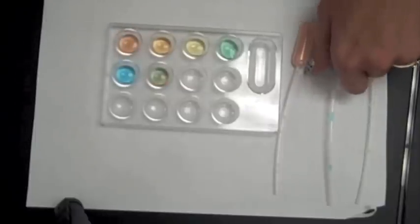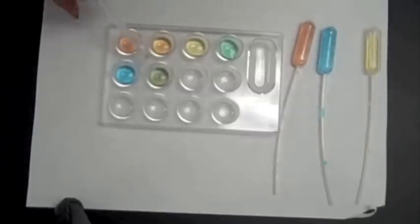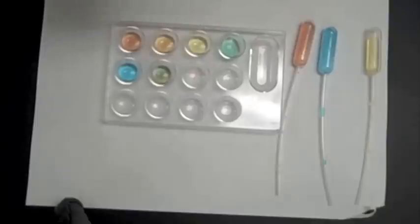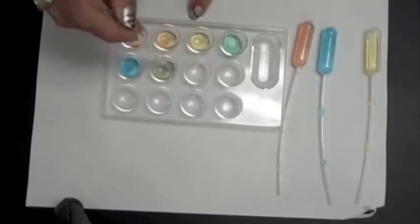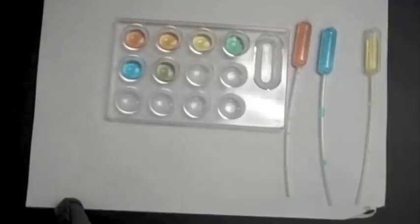Now, it tells us to take our glass stir rod and stir each of the little wells. Obviously, we don't have to do this one because it was just red. Make sure you clean off your stir rod in between. And what do you see? Purple's looking a little weird, but you should see a rainbow.